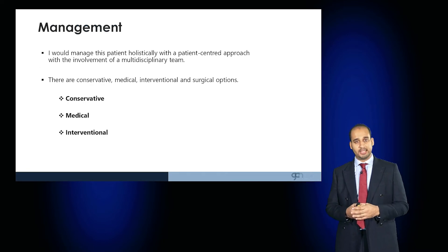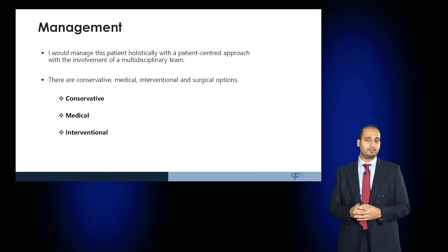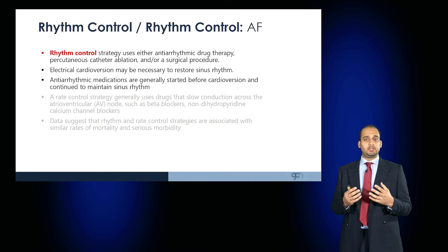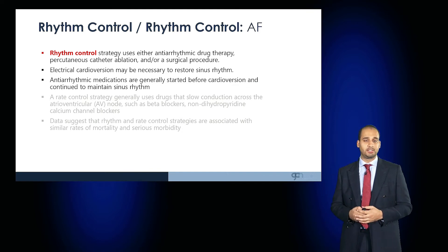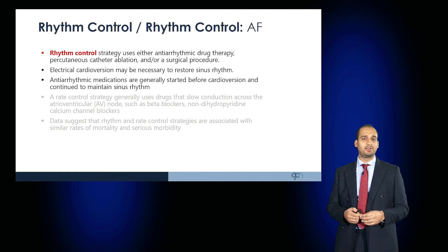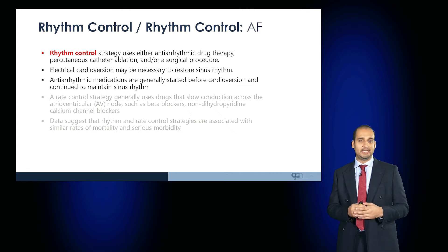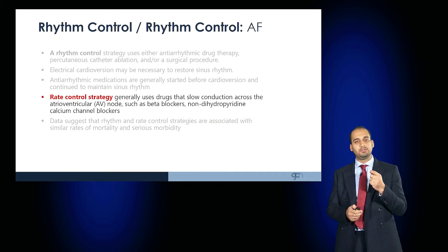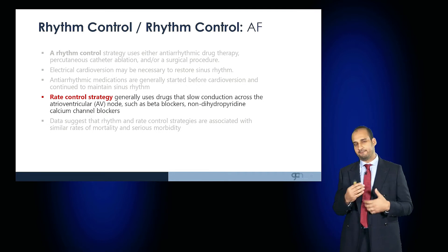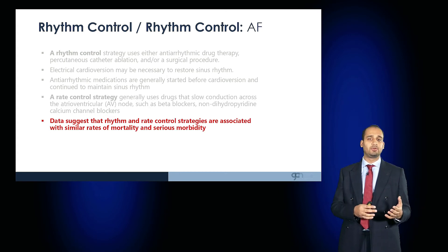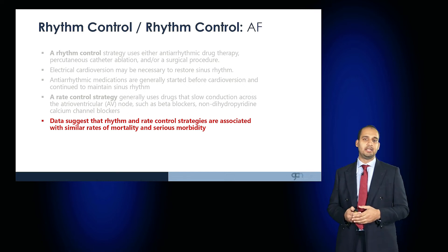To manage patients with atrial fibrillation, a holistic patient-centred approach with multidisciplinary team involvement is required, with conservative, medical, and interventional options presented. Rhythm control strategies include antiarrhythmic drugs, percutaneous catheter ablation, or surgical procedures. Electrical cardioversion can restore sinus rhythm, and antiarrhythmic medications are generally started before cardioversion to maintain sinus rhythm. Rate control drugs — such as beta blockers and calcium channel blockers — slow the heart rate in fast AF. Interestingly, data suggests that rhythm control and rate control strategies yield similar rates of mortality and serious morbidity.